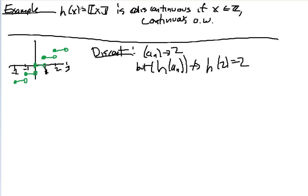We are looking at the example. H of x is the greatest integer function. That's going to be discontinuous at the integers and continuous everywhere else. And here's a graph of h of x. It looks basically like a bunch of steps.